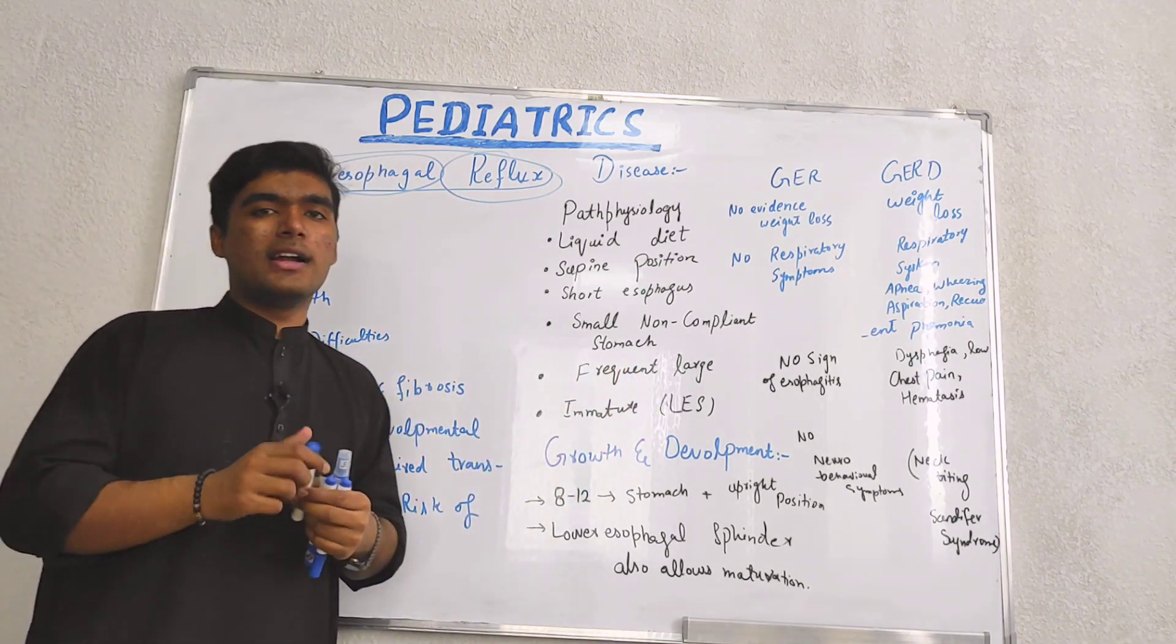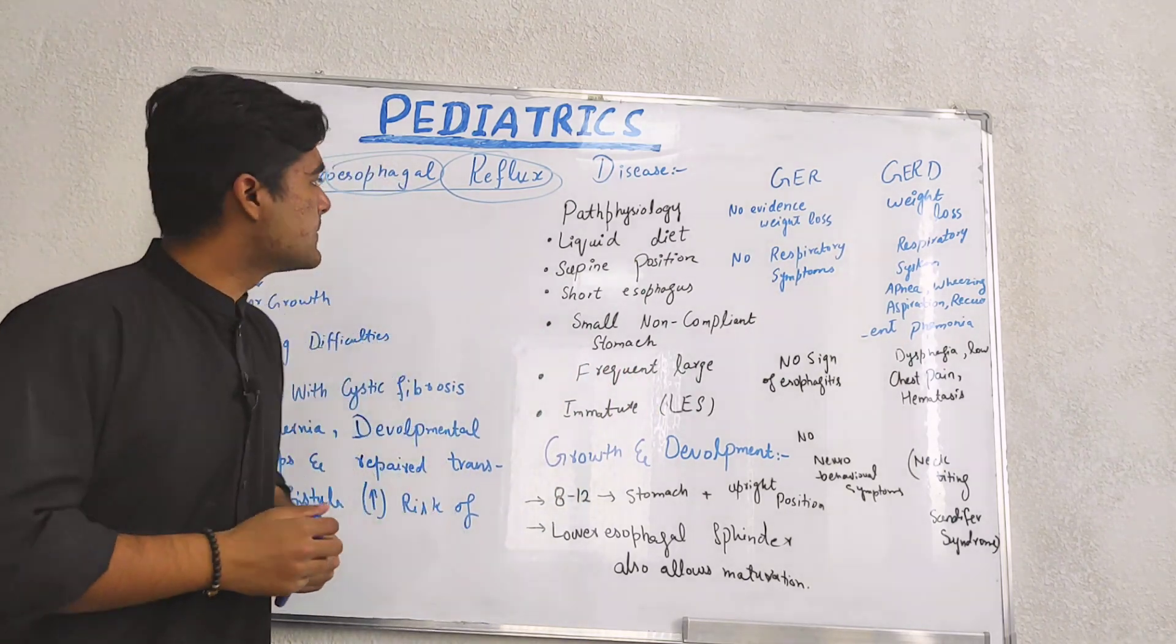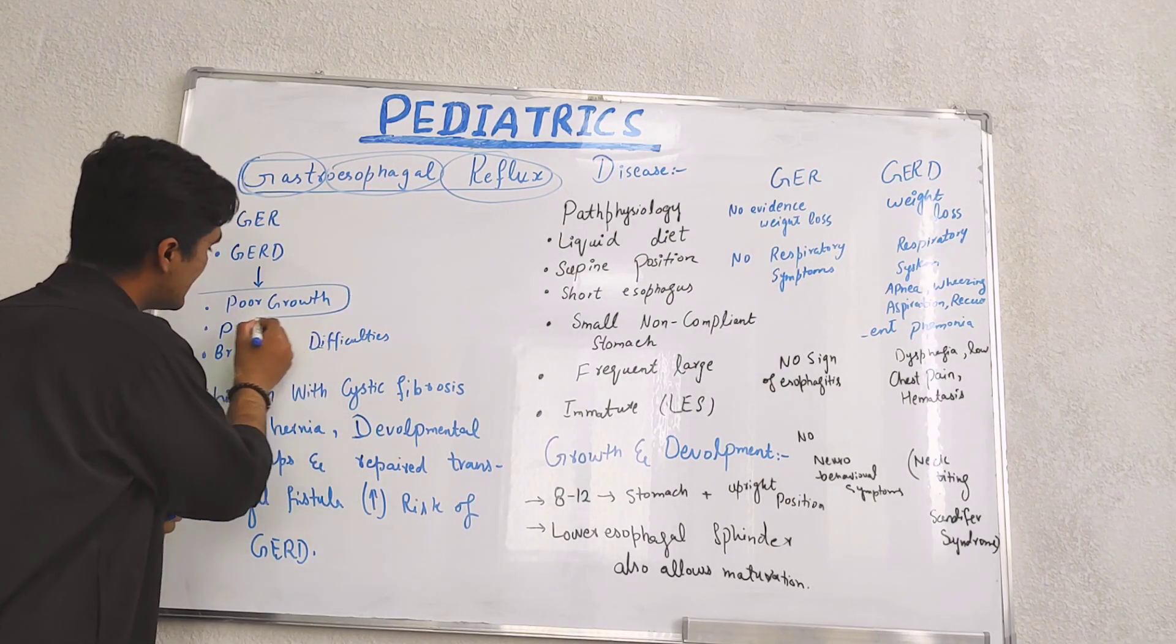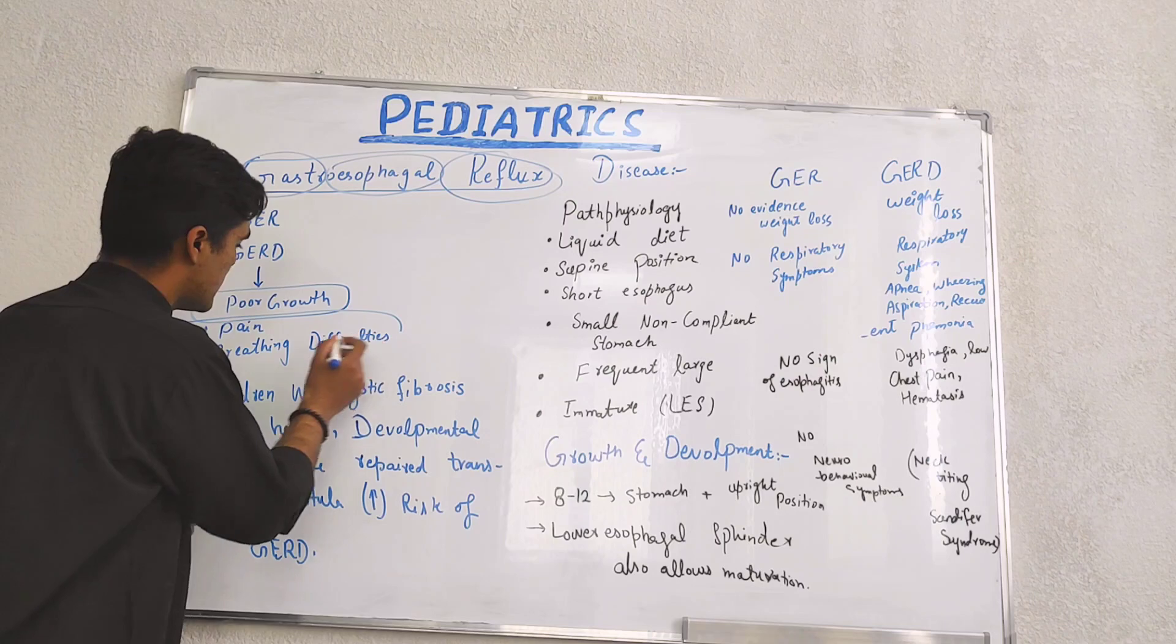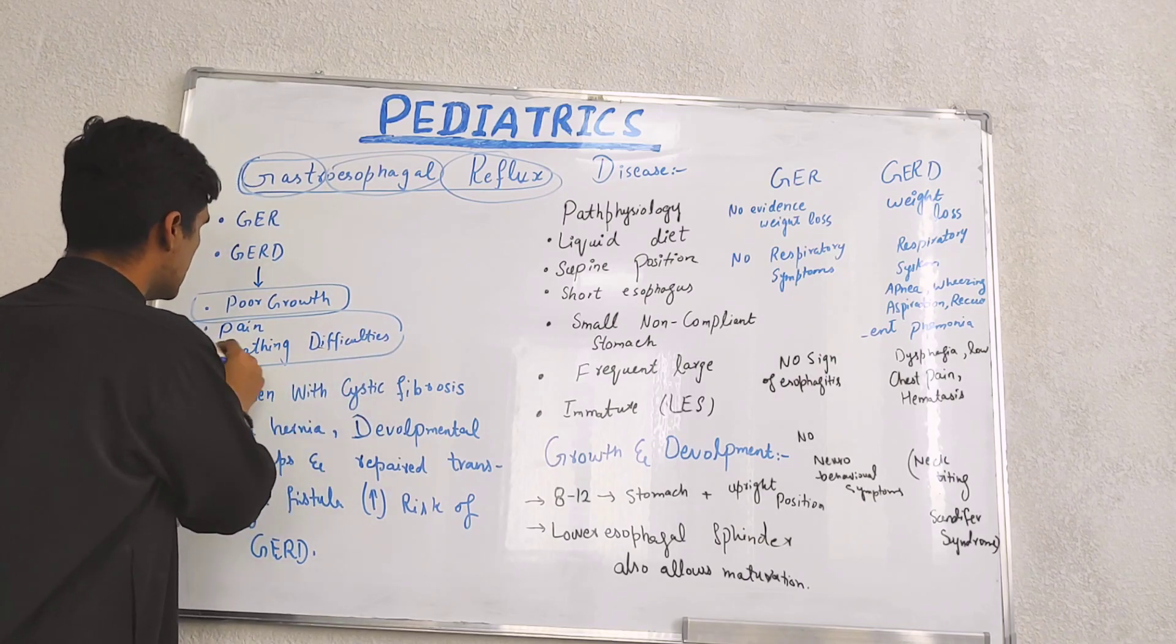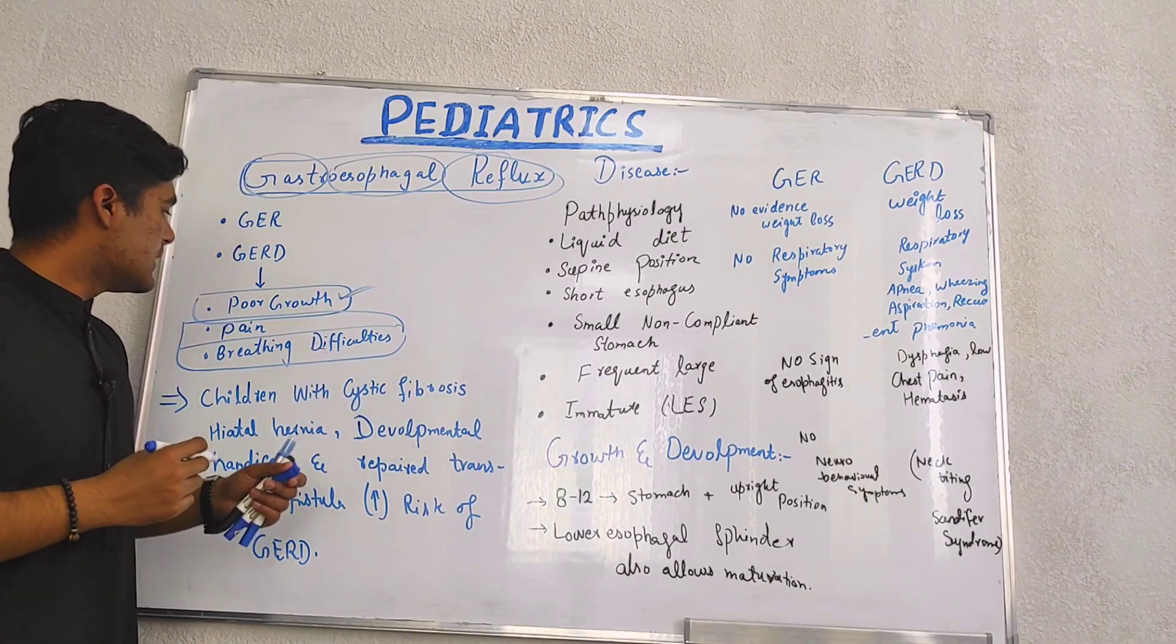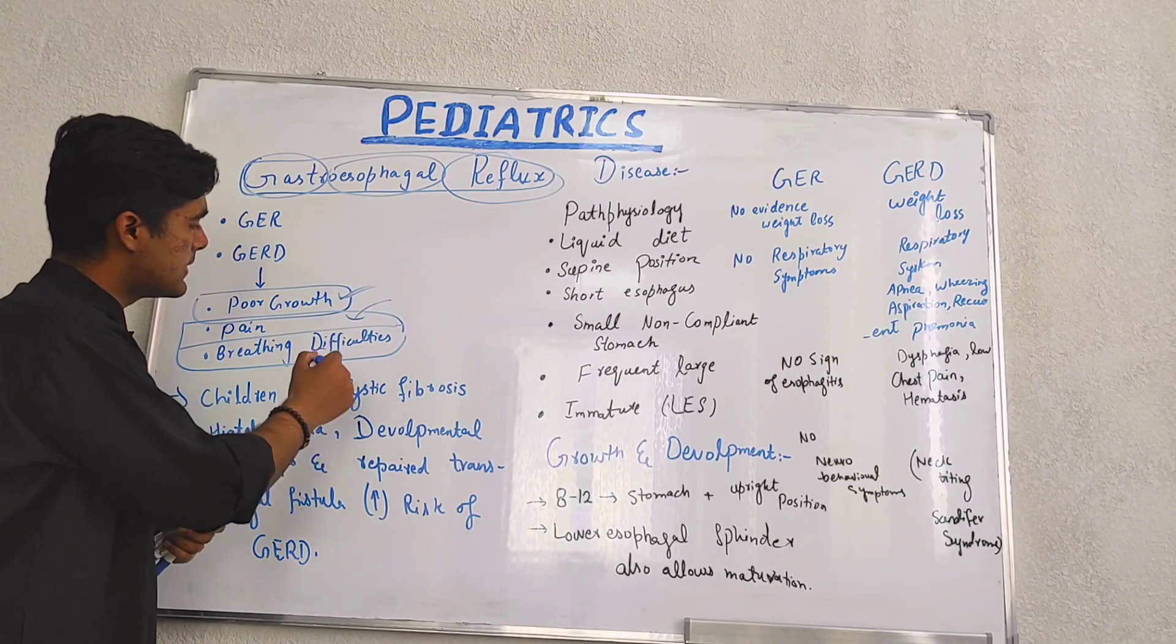This effortless spitting is normal until 8 to 12 months, but gastroesophageal reflux disease needs to be treated because it can lead to severe symptoms such as poor growth, pain, and breathing difficulties.